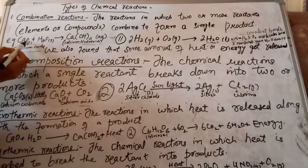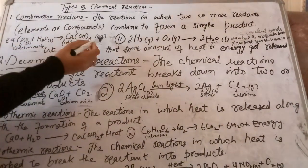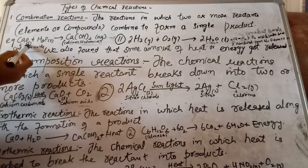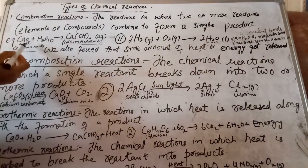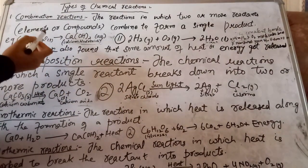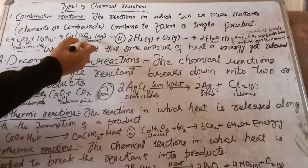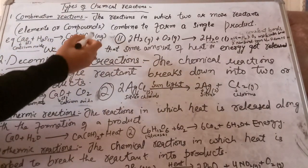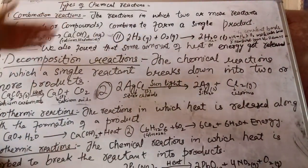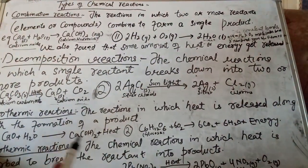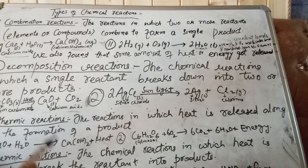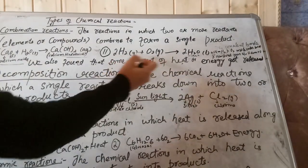The state symbols: (s) stands for solid, meaning calcium oxide is solid; (l) means liquid, which is water; and (aq) means aqueous, meaning calcium hydroxide is in solution form with water as the solvent. Now we have another example of a combination reaction: H₂ + O₂ gives H₂O.